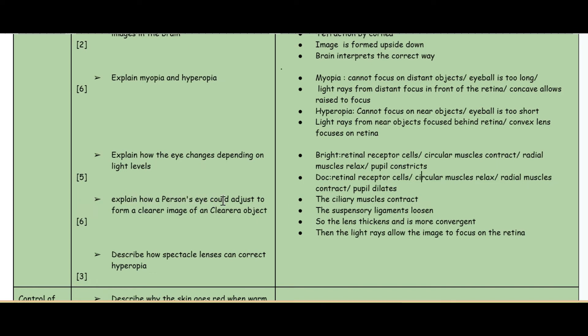The next question: explain how a person's eye could adjust to form a clearer image of an object. The ciliary muscles contract, the suspensory ligaments loosen, so the lens thickens and is more convergent than the light rays and allows the image to focus. Notice the difference: when talking about light levels you focus on circular and radial muscles, and when looking at how far an object is, you look at the ciliary muscles and suspensory ligaments.